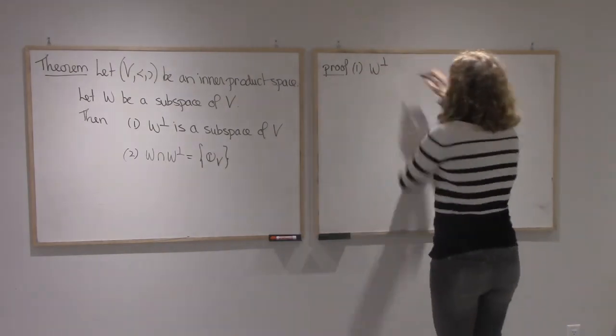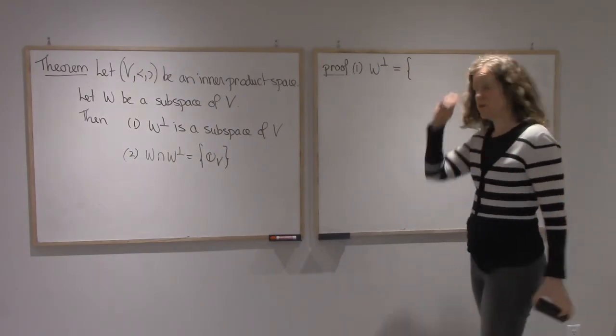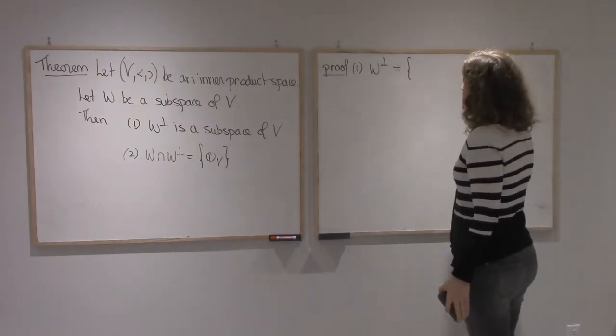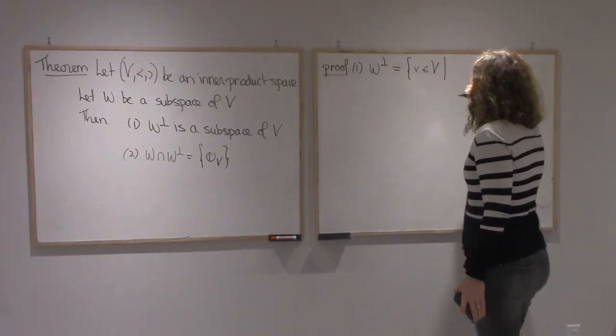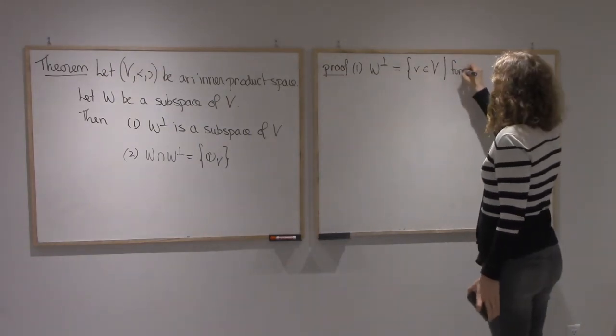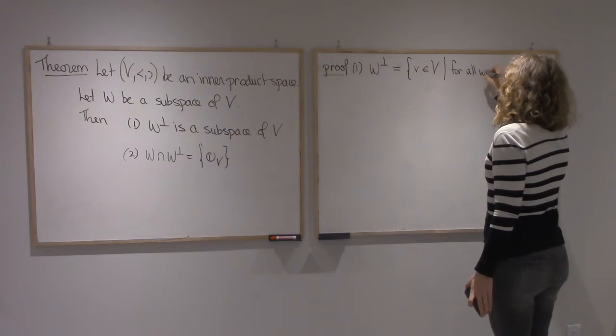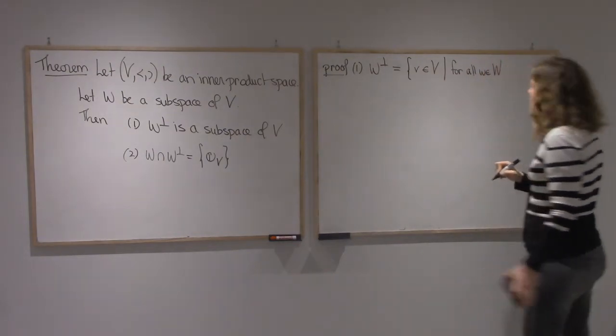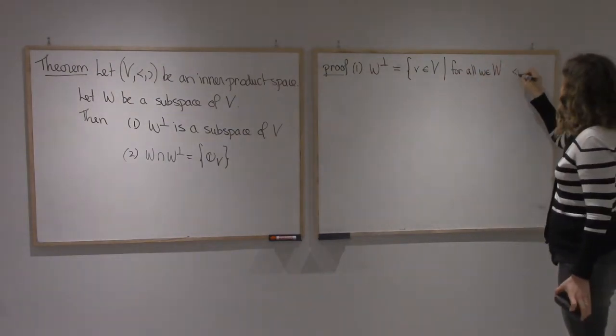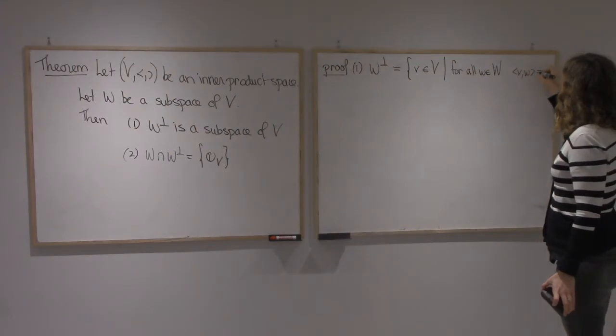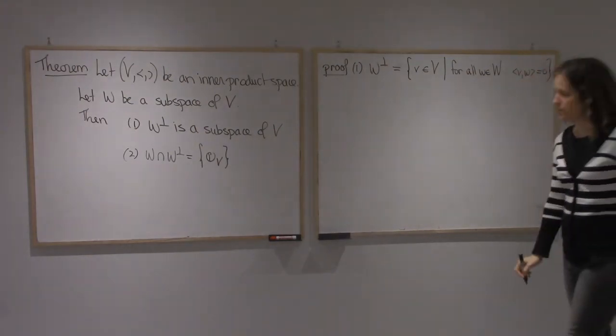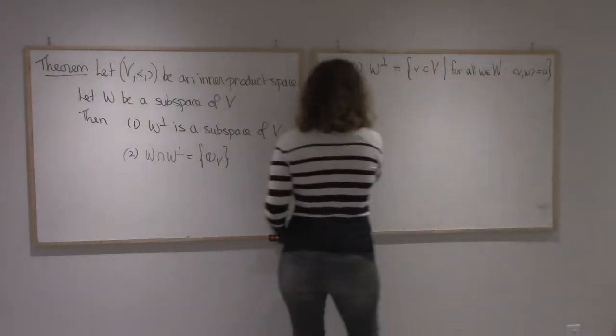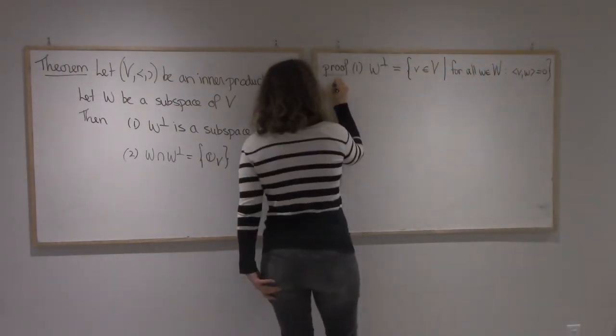So let me remind you of the definition that's going to be helpful in our proof. It's the set of all v in V, so that any w dotted with v gives you zero. Alright, so let's prove the three properties.